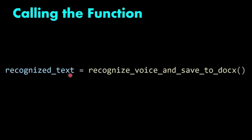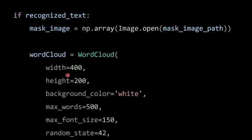Now I'm calling the function: recognized_text = recognize_voice_and_save_to_doc(). This is the function we just defined, and I'm saving the result in the variable recognized_text. Then, if recognized_text is available, I create mask_image using numpy array and Image.open() with the mask file path we defined earlier.